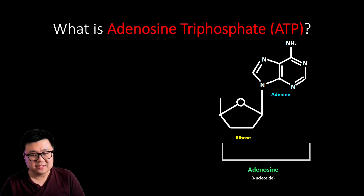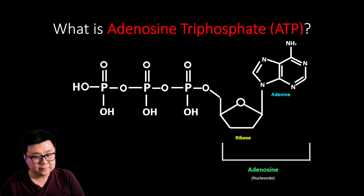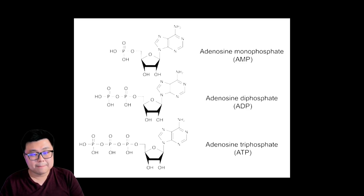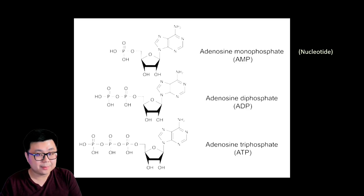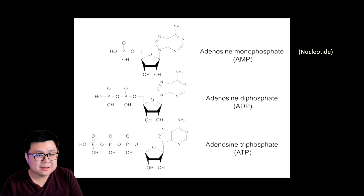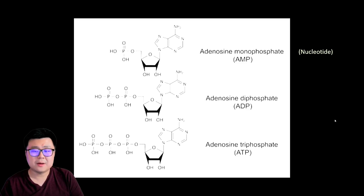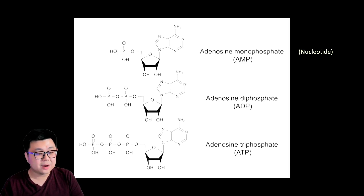Now if we start adding phosphates onto our ribose — one, two, and three — now we have adenosine triphosphate. Adenosine monophosphate, which has only one phosphate, is called a nucleotide. A nucleoside only has a ribose sugar and a nitrogenous base, whereas a nucleotide has a nucleoside with one extra phosphate. If we have two phosphates we call it adenosine diphosphate or ADP, and with three phosphates we call it adenosine triphosphate or ATP.